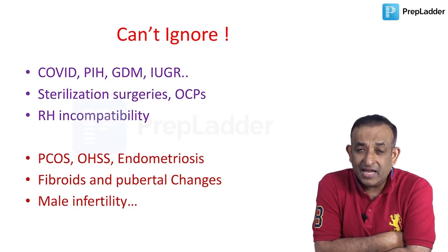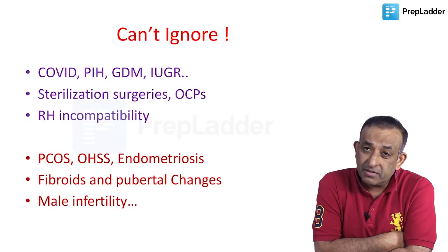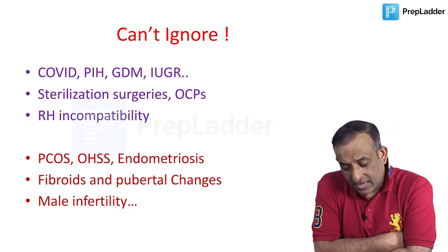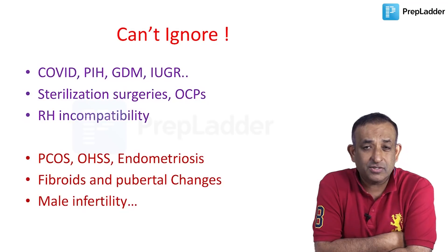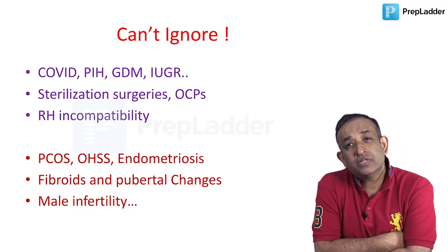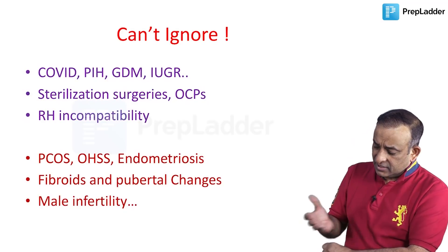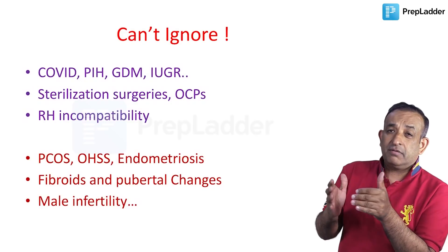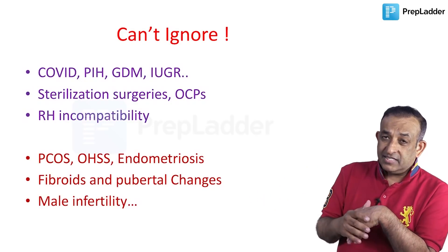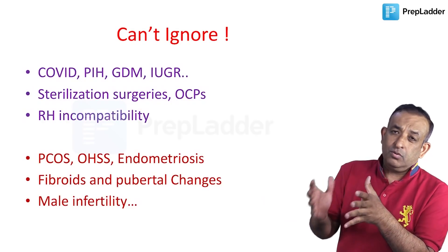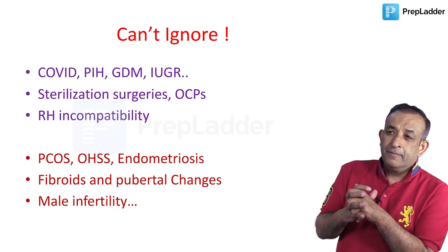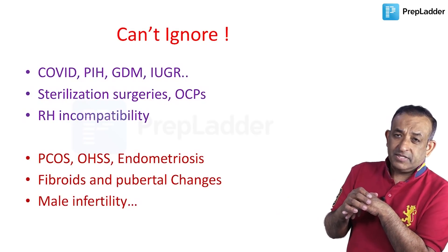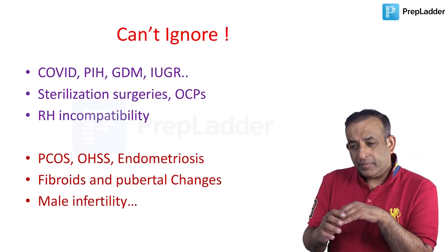What you cannot ignore is COVID — we have made a special mention in the app and in the rapid revision. Definitely read about COVID in pregnancy. Also read about PIH, GDM, and IUGR as a routine — these are easy topics and should be easy to revise. For sterilization surgeries, we always read about tubectomies but forget vasectomies, so do read about vasectomies. In contraception, the combined oral contraceptive pills and their associated complications always find some mention.